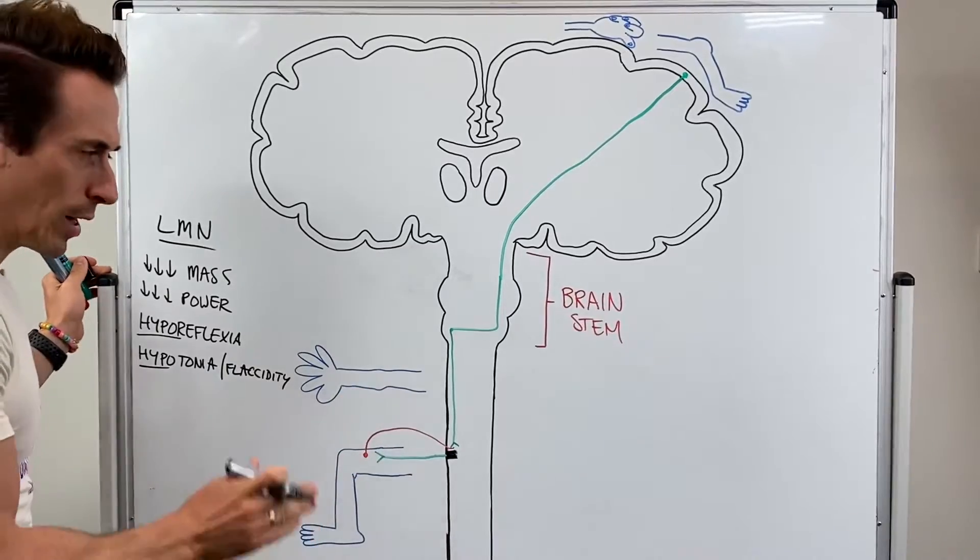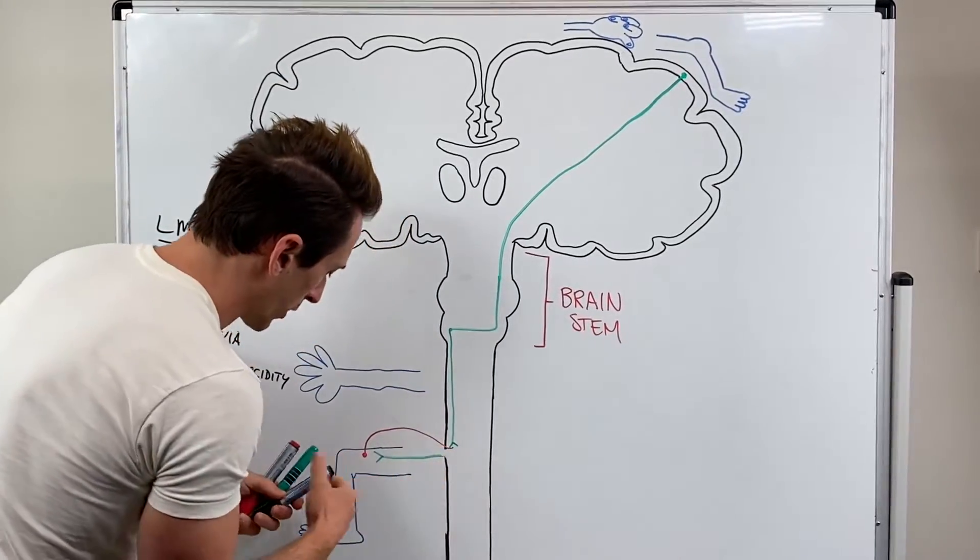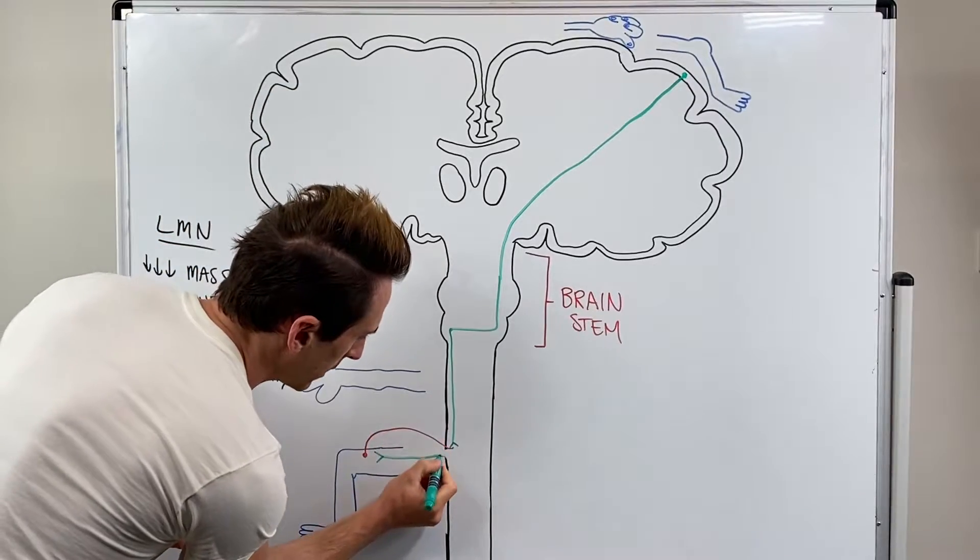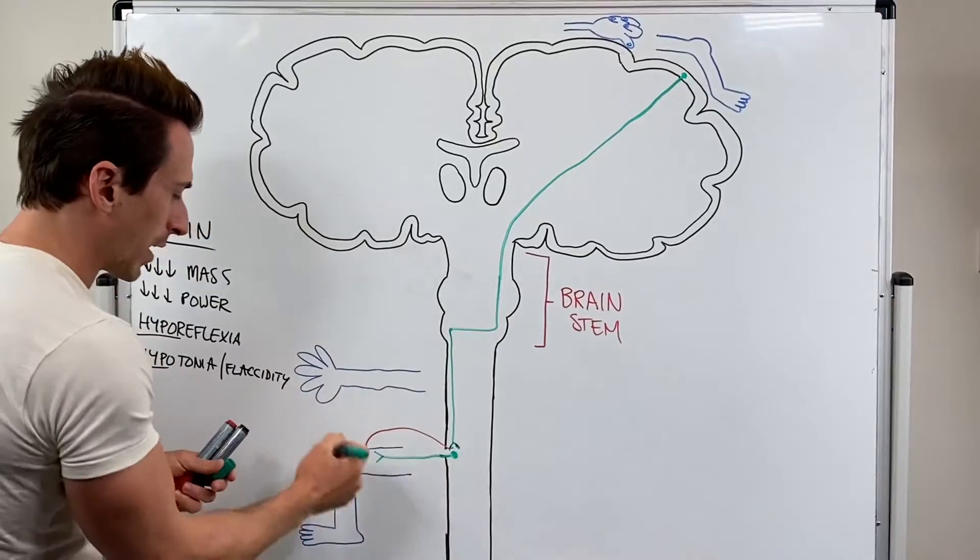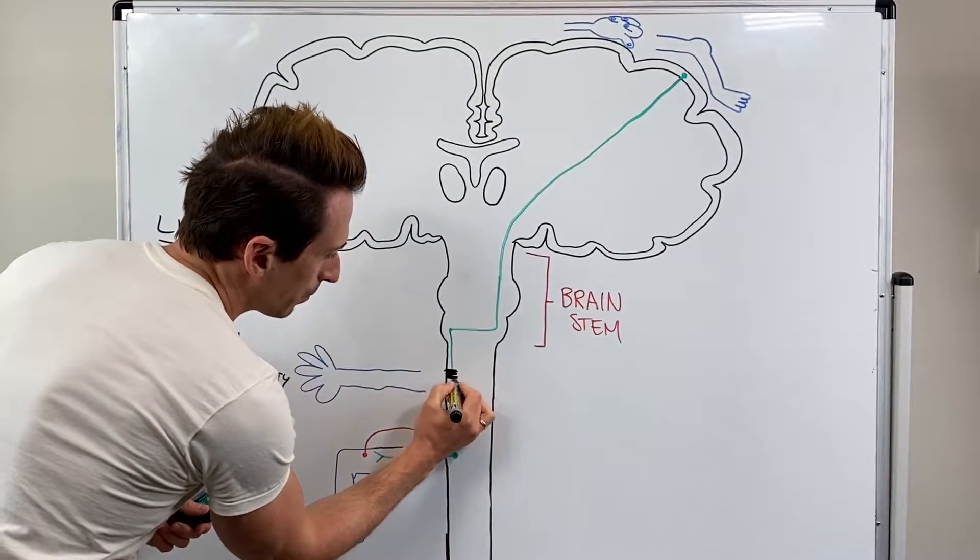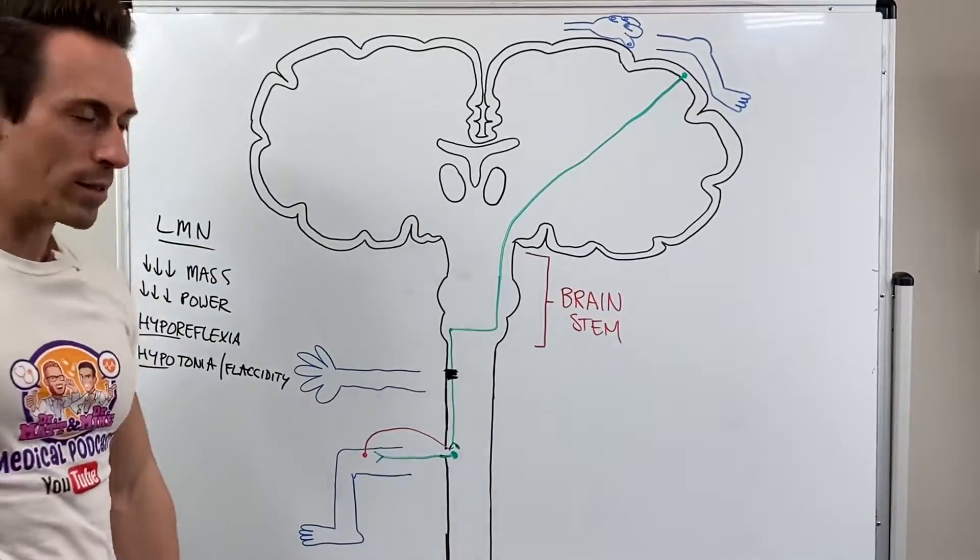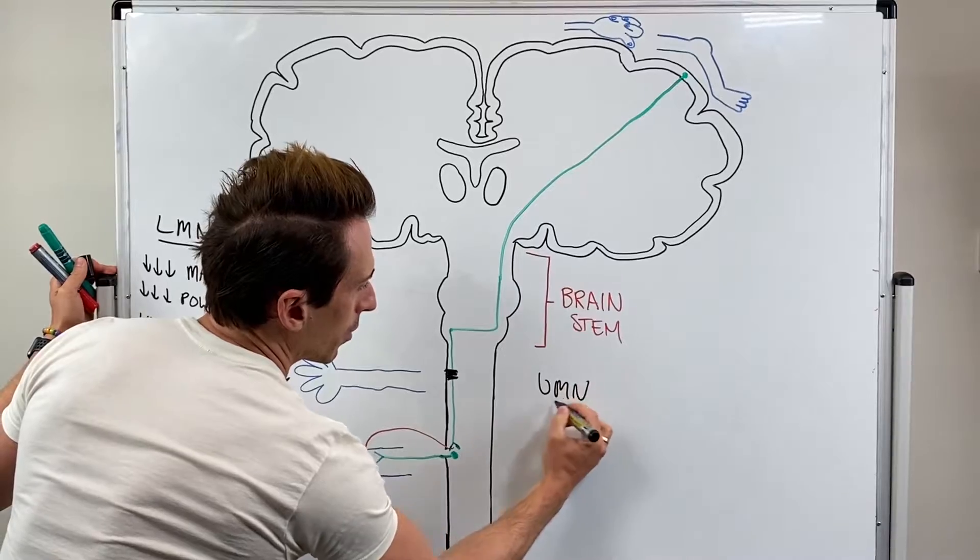So that's a lower motor neuron lesion. Let's just say the lower motor neuron is intact. So let's draw this up again, lower motor neuron is intact, right there. The reflex is intact, but we've got an upper motor neuron injury, so here at the spinal cord. What does this mean? Alright, there's lower motor neuron, let's do upper motor neuron.